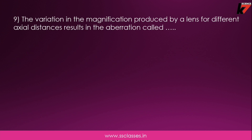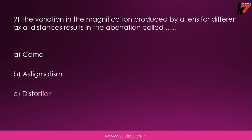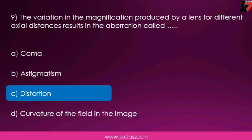Ninth question: the variation in magnification produced by a lens for different axial distances results in the aberration called — coma, astigmatism, distortion, or curvature of the field? These are four different types of aberrations. The correct answer is option C: distortion.